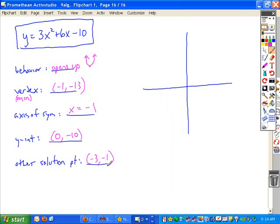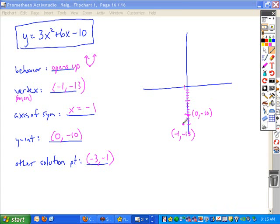And so when you sketch this, what you should do is choose your point. So here's my point negative 1, negative 13. Label it. I'm going to label it opposite the direction the graph opens, so it opens up, so I'm labeling it below. Label your Y-intercept. So here's the point 0, negative 10.